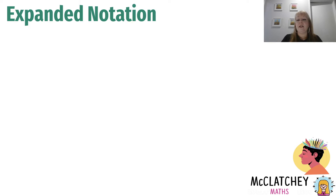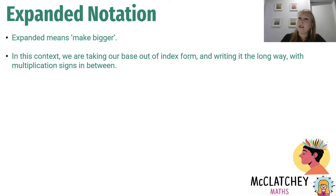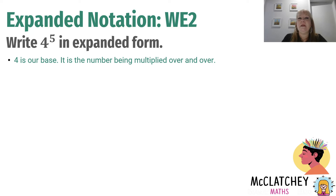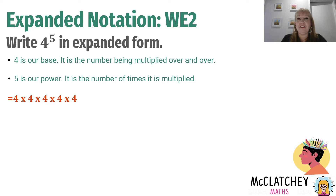Sometimes you're going to be asked to put something into expanded notation. Remember, the word expand from our algebra videos means to make something bigger — when I blow up a balloon, it expands. So we're taking that index form, with a base and a power, and writing it the long way with all the multiplication signs in between. For example, four to the power of five in expanded form: four is our base, five is our power — the number of times we multiply four by itself. So we write four times four times four times four times four. That's all there is to it; you don't have to work it out, just expand it.